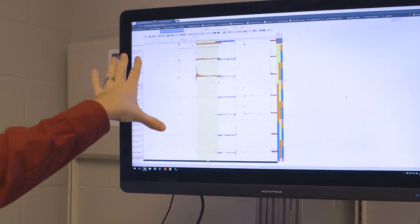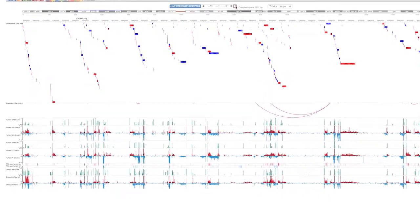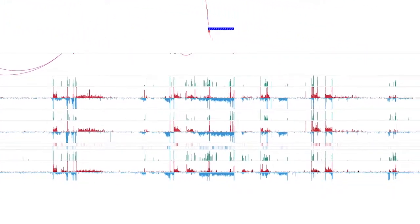In order to study this in greater detail, we've recently developed a method that lets us get a genome-wide map of the location of RNA polymerases transcribing across the genome.